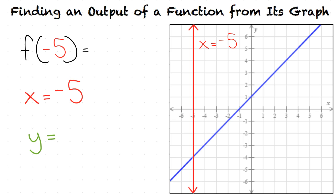From there, we see where our graph intersects with the graph of x equals negative 5. Once we find that point, we look to see what the y coordinate is for that point. In this case, our y value is negative 4. This means that our final answer is f of negative 5 equals negative 4.